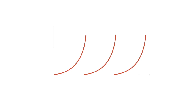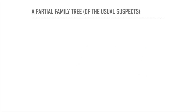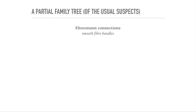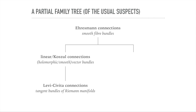The last thing in this introduction video is a little family tree, or hierarchy, of the kinds of connections we normally come across. The most general kind I consider in these videos is the idea of an Ehresmann connection, which you can define when studying smooth fiber bundles. It has two children: linear connections, also called Koszul connections, which you want to study for holomorphic or smooth vector bundles; and a particular example of those is the Levi-Civita connection — if you're studying a Riemannian manifold and look at its tangent bundle, there's a specific connection you can put on it, which is a specific example of a linear connection, which is a specific example of an Ehresmann connection.